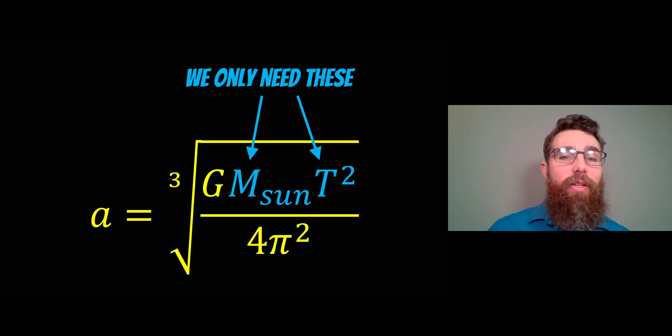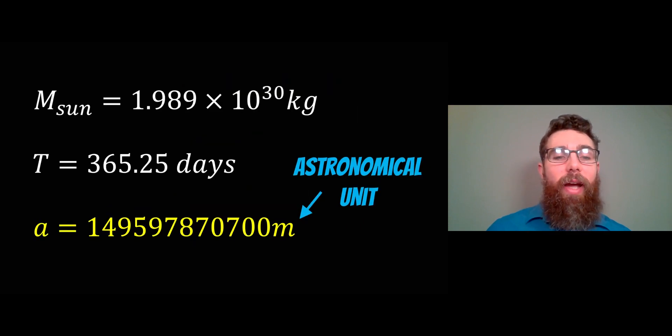If we rearrange that for the semi-major axis, we get this equation. We only need those two things: the orbital period and the mass of the Sun. We know the orbital period now from our calculations, and let's assume we already know the mass of the Sun from some other measurement technique.